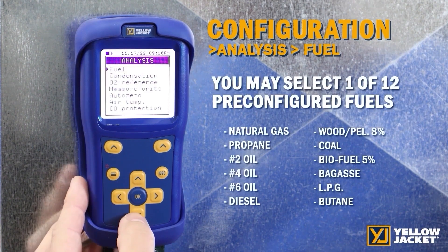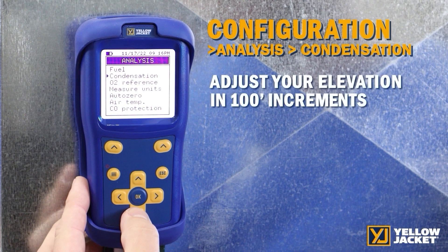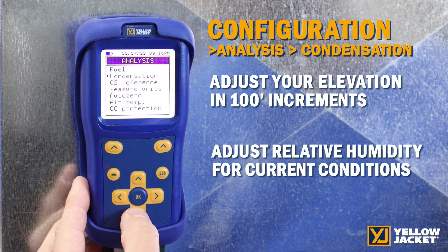In the fuel menu, you have the option to select one of twelve pre-configured fuels. Condensation allows you to adjust your elevation in 100-foot increments and adjust relative humidity for current weather conditions.